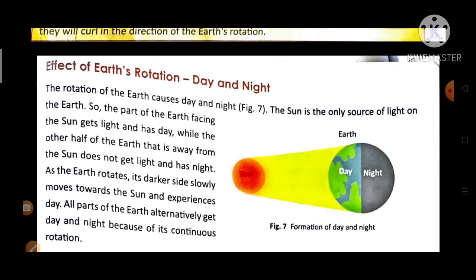So the part of the Earth facing the Sun gets light and has day, while the other half of the Earth that is away from the Sun does not get light and has night. As the Earth rotates, its darker side slowly moves towards the Sun and experiences day. All parts of the Earth alternatively get day and night because of its continuous rotation.